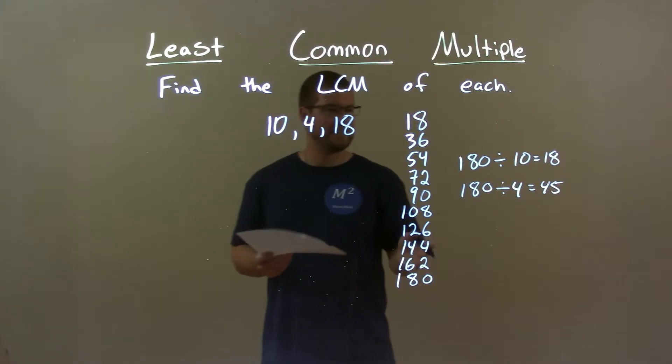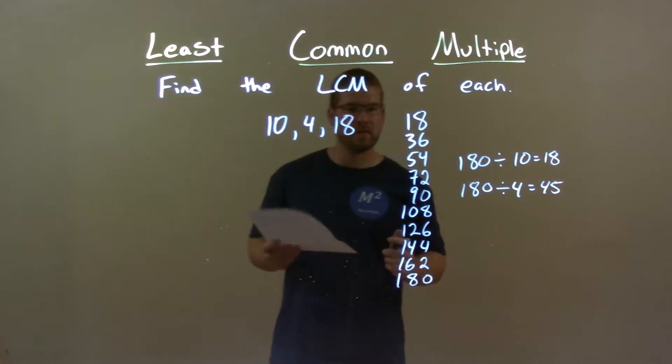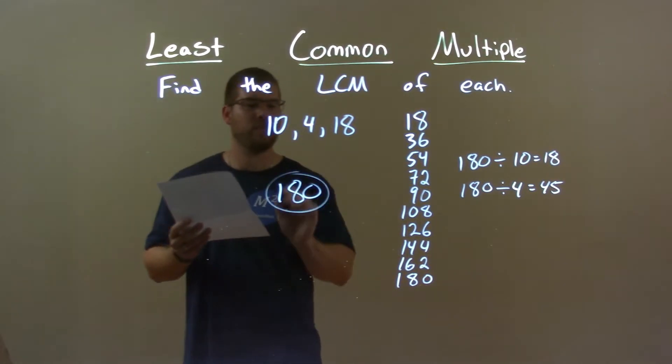So it's the first multiple of 18 that's divisible by 4 and 10 evenly. So 180 is my final answer.